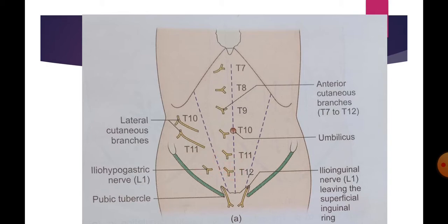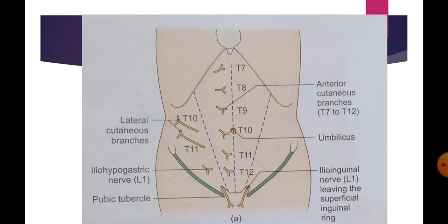The iliohypogastric nerve is a branch of the first lumbar nerve. The nerves T7 to T12 enter the abdominal wall from the intercostal spaces and pass between the internal oblique and the transversus muscle. In the anterior abdominal wall, we have the external oblique, then the internal oblique, and deeper still the transversus abdominis. The nerves then pierce the posterior lamina of the internal oblique aponeurosis to enter the rectus sheath.